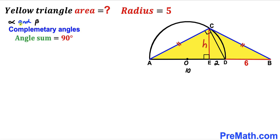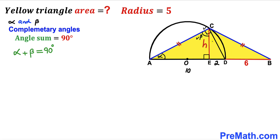Now let's assume alpha and beta are two complementary angles, meaning alpha plus beta equals 90 degrees. This angle is alpha, and next to the 90-degree angle, this other angle is beta. Furthermore, where we have a 90-degree angle and beta, the remaining tiny angle is alpha.